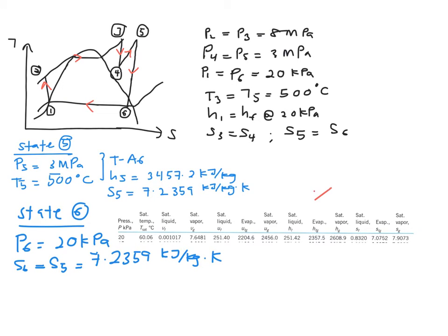Referring to your table E5, you will see that at 20 kPa, your S given here is 7.2359. When you double check with your entropy value, your 7.2359 lies in between these two points. So meaning that your state 6 is in the correct position where it is in the mixture region.